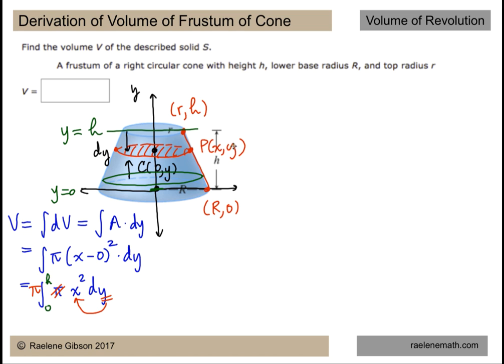We do that by considering that there's a relationship for the points P with coordinates unknown x and y and the relationship is that they lie on a line. So we want to come up with the equation of that line. There are lots of ways to do it. You can pause it and do it for yourself, but I'm going to consider doing it using similar triangles.